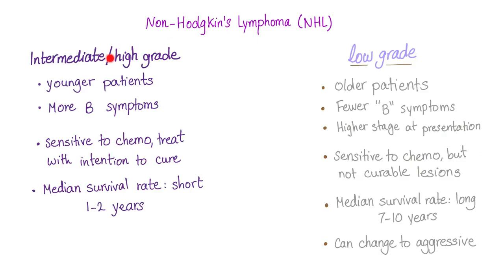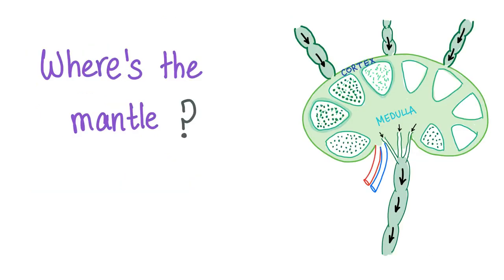Here are the aggressive subtypes and the indolent subtypes. For aggressive subtypes such as mantle cell lymphoma: patients are usually younger, have more B symptoms, are sensitive to chemo, and we treat with intention to cure. Unfortunately, median survival is short.